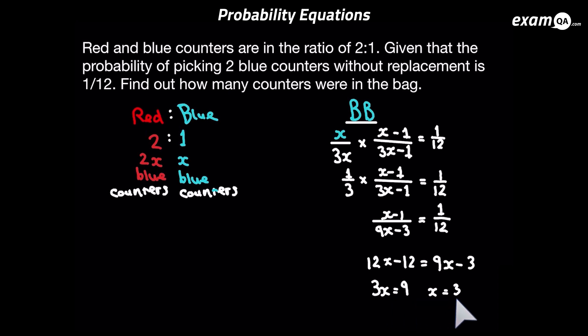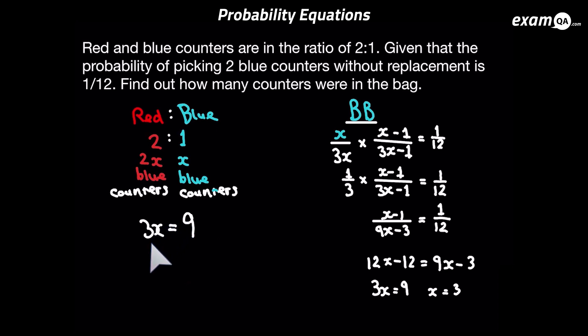Now we've worked out the value of x. However, the question wanted us to work out how many counters are in the bag. We said there's 2x red counters and x blue counters, which means there's 3x amount of counters in the bag. So we need to work out what 3x is, and we already know 3x is equal to 9. So there are 9 counters in the bag.